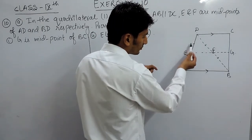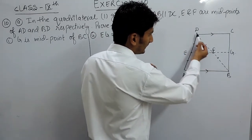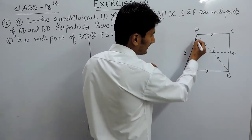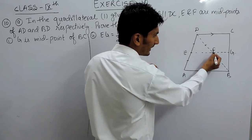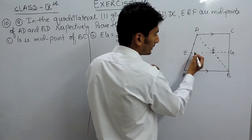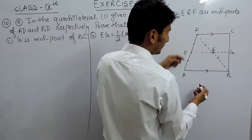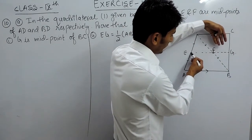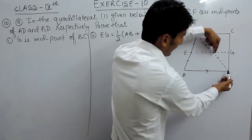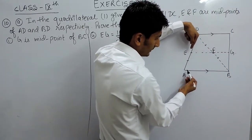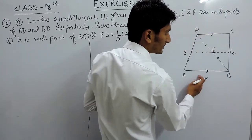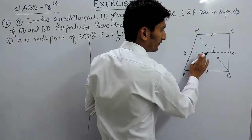Let's talk about triangle ABD. E is the midpoint of AD and F is the midpoint of DB. According to the midpoint theorem, in a triangle, if we join the midpoints, this line EF must be parallel to AB, and this line must be half of AB. So this is the first case.